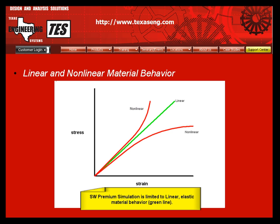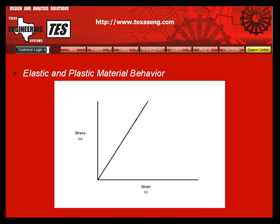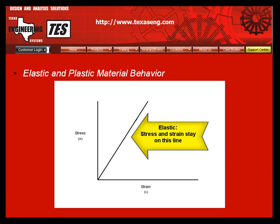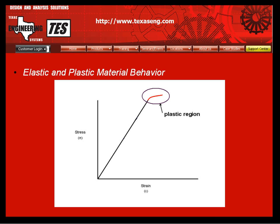Note that SolidWorks Premium Simulation is limited to linear elastic material behavior as shown by the green line. Another consideration is whether the material behaves elastically. Most materials behave elastically if you do not apply too much load. The material strain will go back to zero and stay along the straight line when you unload the structure. If you apply too much load, the material can either break or exhibit a plastic effect, also known as yielding, shown by the red trace on the graph.